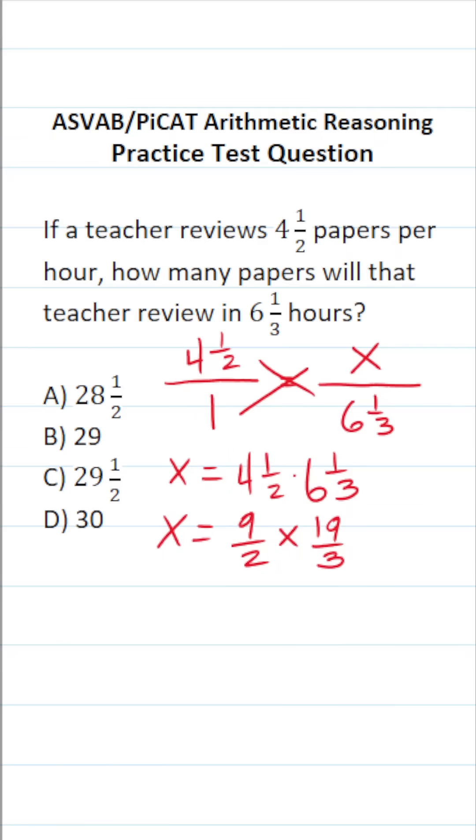Before we multiply these fractions, let's go ahead and try to cross reduce as much as possible. In this case, I could say three goes into three one time. Three goes into nine three times. So this is three over two times 19 over one.